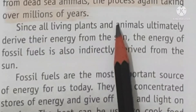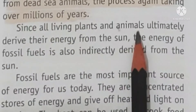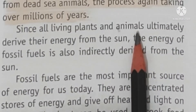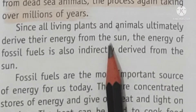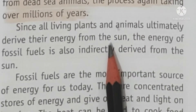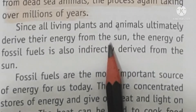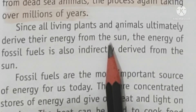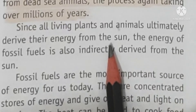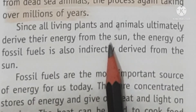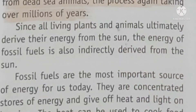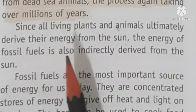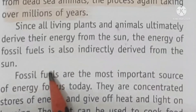As many living plants and animals derive their ultimate energy from the sun — if the sun were not there, plants would not grow, then herbivores would not eat food, and carnivores would not eat herbivores. Life would not be possible without the sun. In the same way, the energy of fossil fuels is also directly derived from the sun.